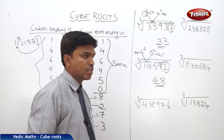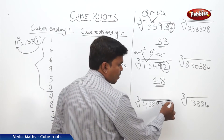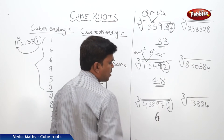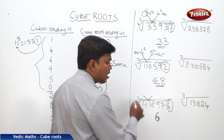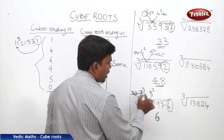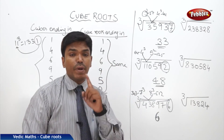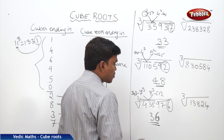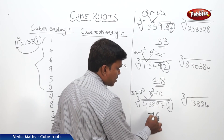Now let me solve the next problem. Make the partition — 3 digits and 3 digits from the right. The cube number ends in 6, so the cube root also ends in 6. The second partition is 438. The number 438 comes between 7 cubed (343) and 8 cubed (512). We take the lesser number, which is 7. So the answer is 76.